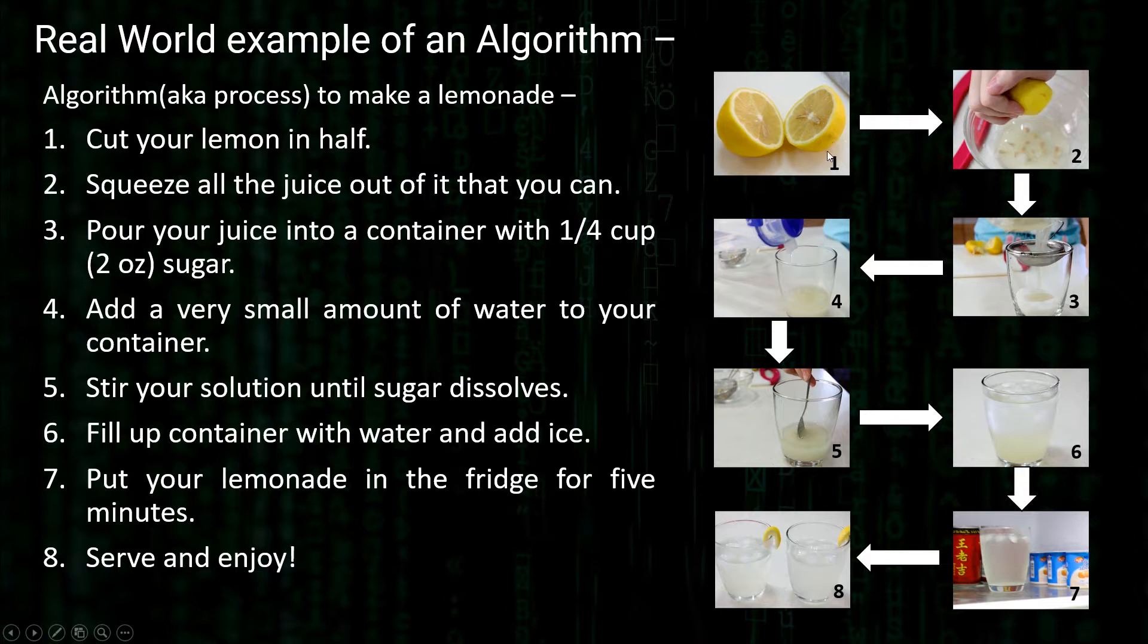Step one is you cut the lemon in half. Then you move on to step two, squeeze all the juice out of it. Step three, pour your juice into container. Step four, add a very small amount of water to your container. Step five, stir your solution. Fill up the container with water and add ice. Put your lemonade in the fridge for five minutes and then it is ready.